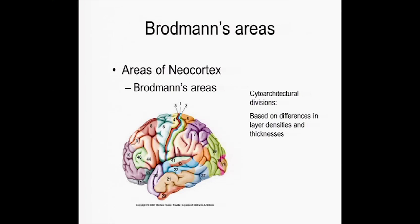Area 41 is the primary auditory cortex. Area 4 is the primary motor cortex. The frontal cortex is really about preparing and thinking about what you're going to do and why, and the most basic function is preparing motor movements — neurons here can be directly related to planning movement of a specific muscle group. And Brodmann areas 1, 2, and 3 on the other side of the central sulcus are the somatosensory cortex.